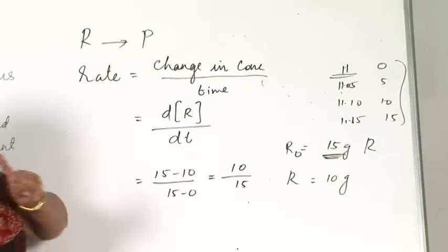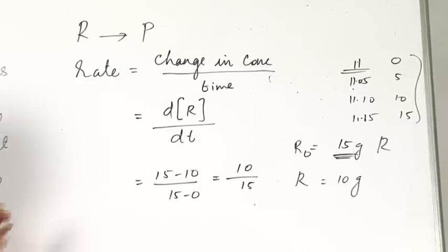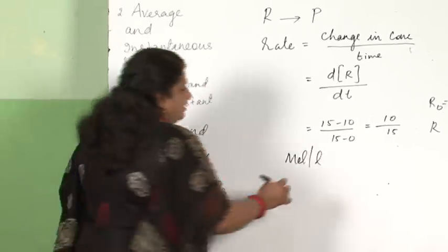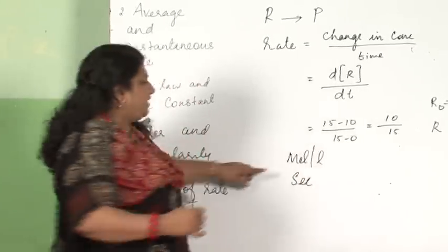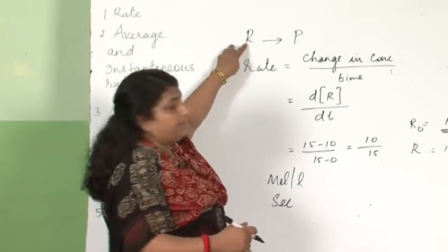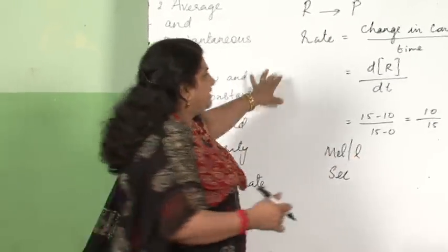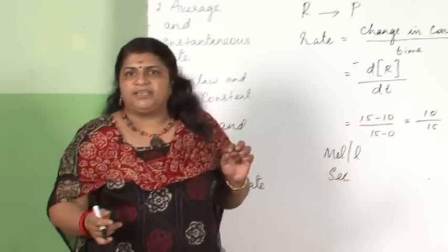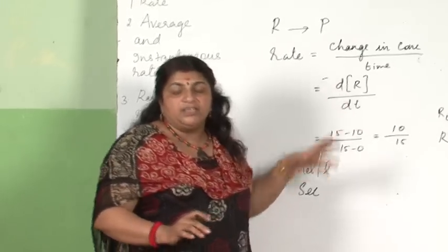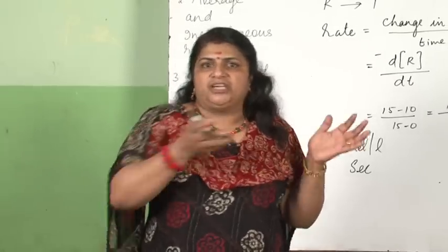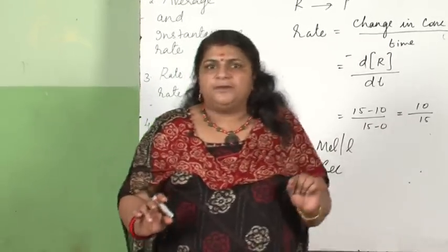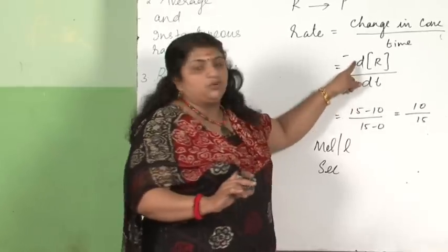Always remember: concentration is taken in moles per liter and time normally in seconds. Since the amount of reactants is reducing, we write it as −dR/dt — the negative sign indicates the quantity is reducing. The reactant is converting to product; initially 15 grams, after the reaction only 10 grams is left. So the negative sign only means the amount of reactants is decreasing.